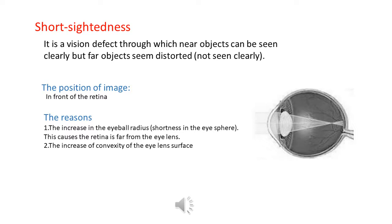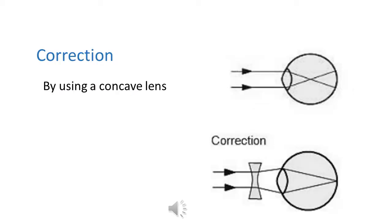Short-sightedness is a vision defect through which near objects can be seen clearly, but far objects seem distorted. The image in short-sightedness is formed in front of the retina. The reasons include: an increase in the eye bulb radius, which causes the retina to be very far from the eye lens, and an increase in the convexity of the convex lens. The correction is done by using a concave lens.